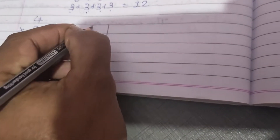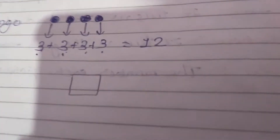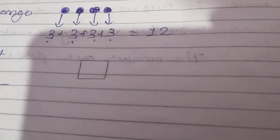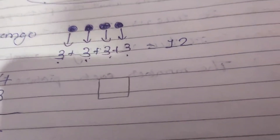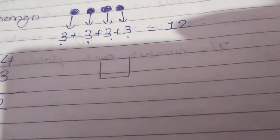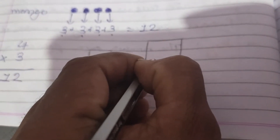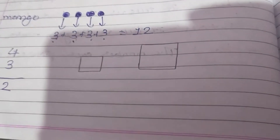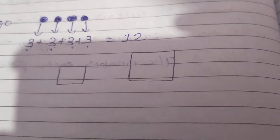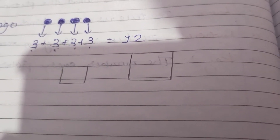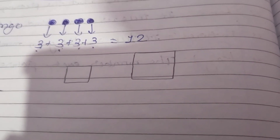This is our square — it looks like this. जो हमारा square होता है उसकी side होती है वो equal होती है — every side is equal.